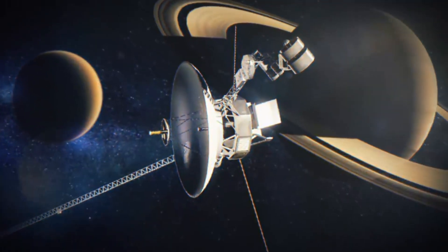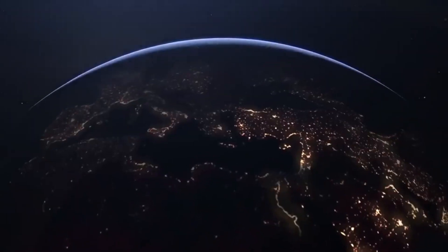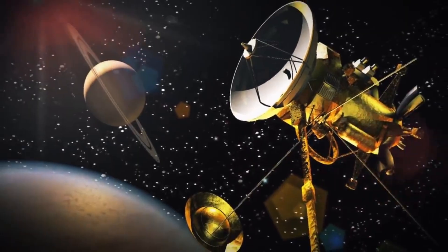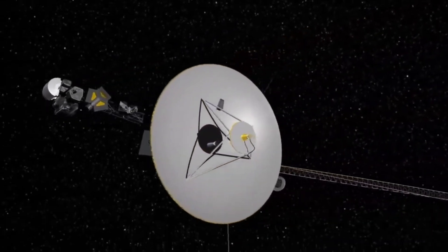Now that the transmission rate is just about 160 bits per second, sending just one image would take more than eight hours. Moreover, Voyager 1 is currently 23 billion kilometers away, so it would actually take 21 hours for that signal to reach us.